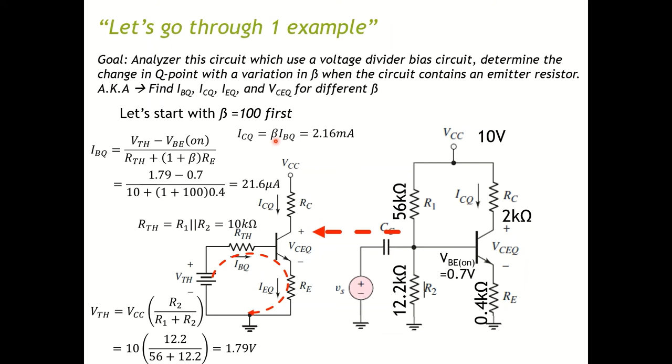You put in a number and you have your base current, piece of cake. After you have your base current, multiply that by β, then you can have your collector current. Then you do the same thing, multiply that by (1 + β), you have your emitter current.